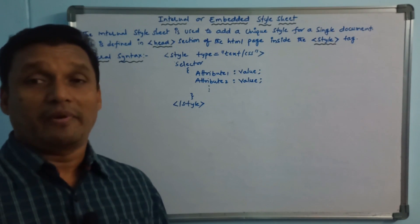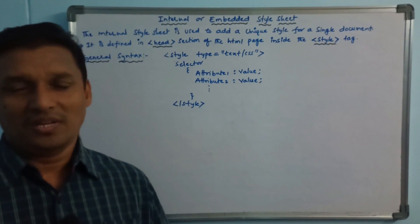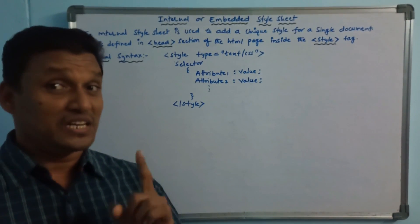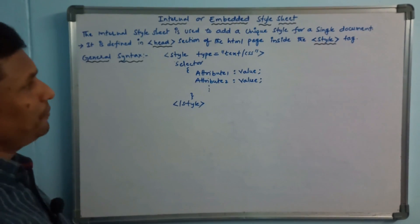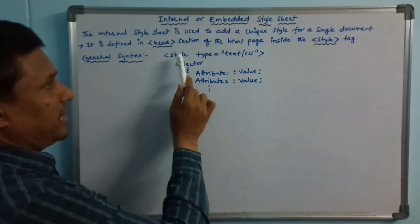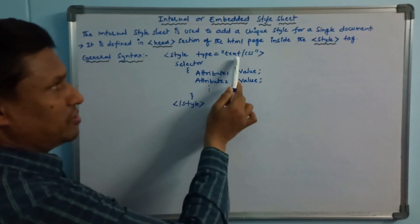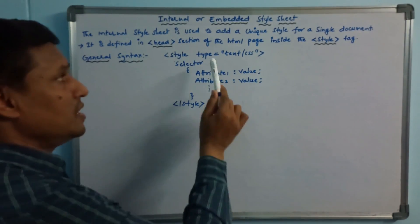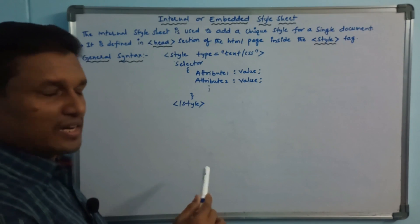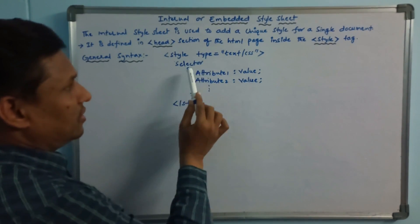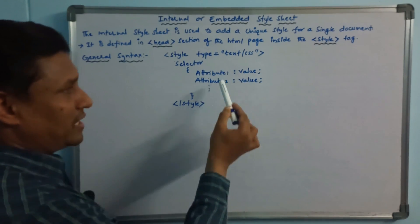The internal stylesheet is defined inside the style tag. The general syntax format uses the style tag with type equal to text/CSS. Inside the style tag, you write: selector, then attribute 1 colon value semicolon, attribute 2 colon value semicolon, and so on.